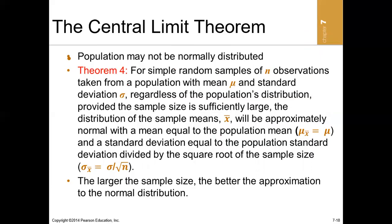Theory three says that theory one and two will hold if the population is normally distributed. Theory four says that even if the population is not normally distributed, if the sample size is sufficiently large, the sampling distribution will still be normally distributed.